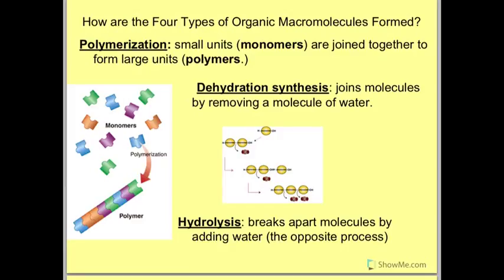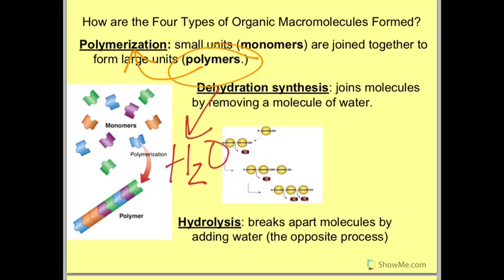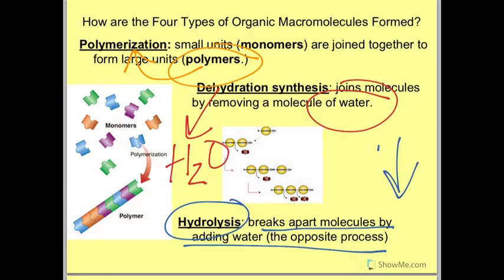The first one will be polymerization. Small units, which we call monomers, are going to be joined together to form large units called polymers. So the making of polymers is polymerization. Dehydration synthesis — think about when you're dehydrated, you lose H₂O — that's exactly what happens here. Dehydration synthesis joins molecules together by removing water. And finally, the opposite: hydrolysis. When you get hydrated, you're adding water. So hydrolysis breaks molecules apart by adding water. These two are opposites of each other.